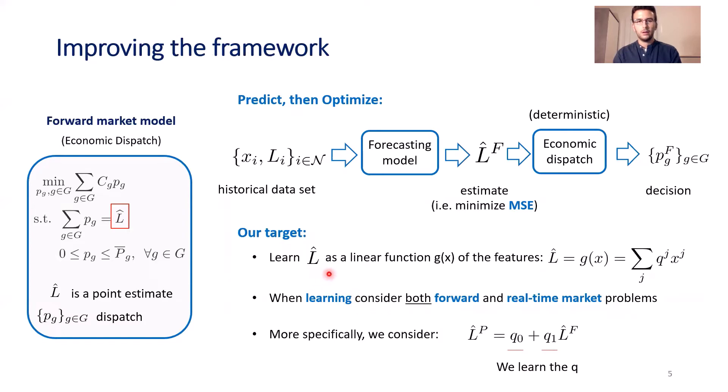We want to learn this while considering the objective function of minimizing the total cost. More specifically, we consider that we have available as a feature this estimate that minimizes the mean square error. This is our only feature and we have a linear model that produces an enhanced point estimate that minimizes the cost. Our goal is to learn these two variables that represent our policy, these two queues.